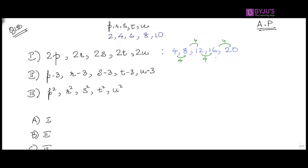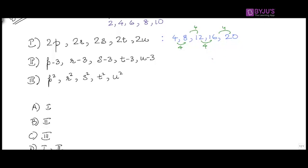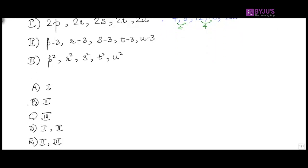That means eliminate all the answer choices where one is not present. So B goes out, C goes out, and E goes out.